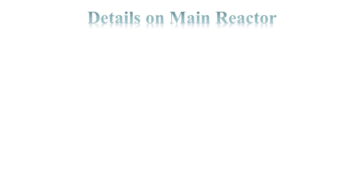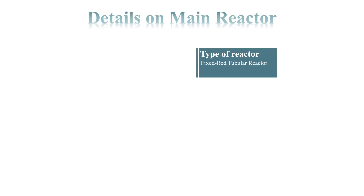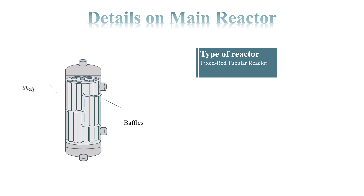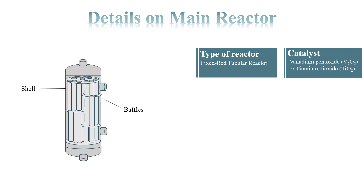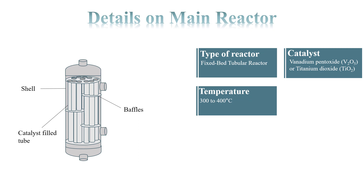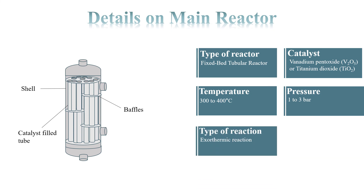Details on the main reactor: the main reactor is a fixed-bed tubular reactor. This reactor uses either vanadium pentoxide or titanium dioxide as a catalyst, filled in the tube. It operates at a temperature range of 300 to 400 degrees Celsius and a pressure range of 1 to 3 bar. The type of reaction that occurs inside this reactor is exothermic, and molten salt is used as the cooling medium.